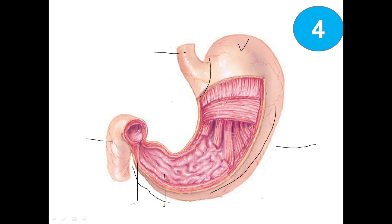The stomach has two curvatures: the greater curvature and the lesser curvature. This one here is the cardiac notch, and this one is the pyloric notch.